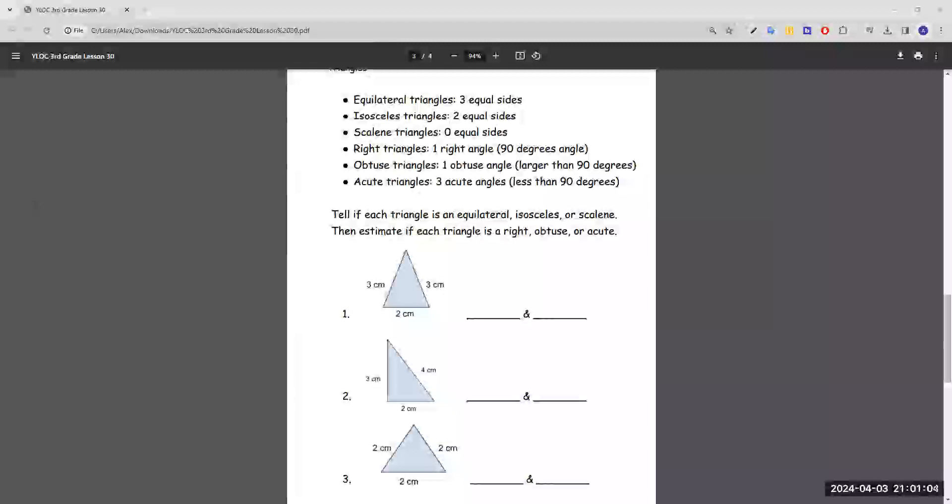So number one, there's two sides that are both three centimeters and one side that is two centimeters. Looking above at the descriptions, it says here two equal sides is isosceles. So we know that this would be isosceles. That tells us what the sides are.